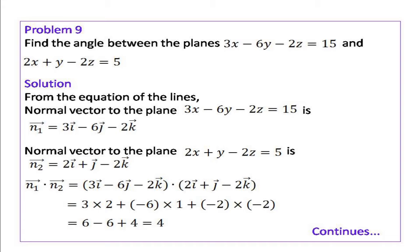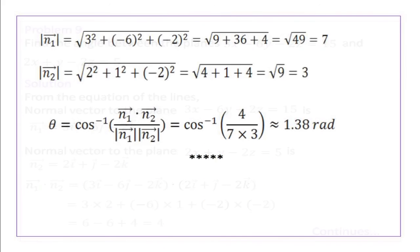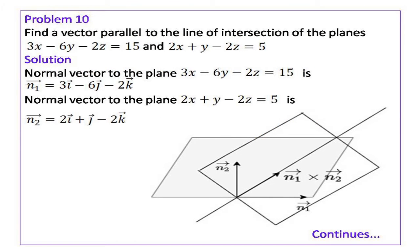Then, vector n1 dot vector n2 equal to (3i minus 6j minus 2k) dot (2i plus j minus 2k), which equals 4. The magnitude of vector n1 is 7 and the magnitude of vector n2 is 3. Substituting these values in the equation, theta equals cosine inverse of vector n1 dot vector n2 divided by magnitude of n1 into magnitude of n2, which is cosine inverse of 4 over 21, equal to 1.38 radians.